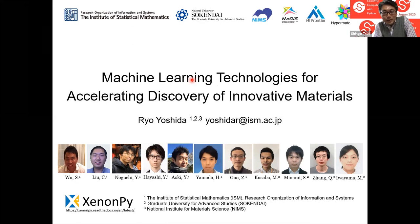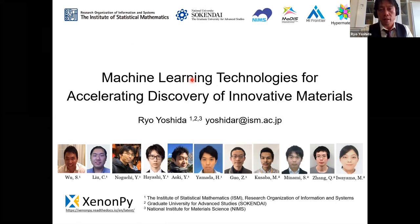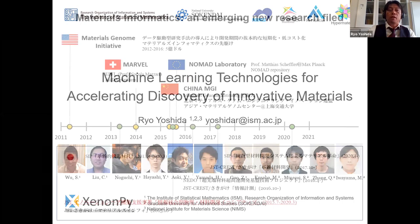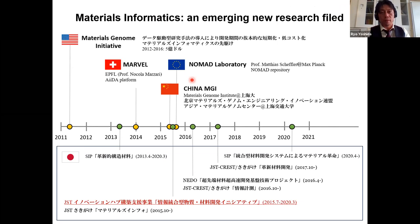どうも。統計数理研究所の吉田と申します。このような場にお招きいただきまして大変ありがとうございます。今日はいわゆるマテリアル・インフォマティクスと呼ばれる、データ化学と物質材料研究の学際領域に関するお話を、サイパイのコミュニティの方々と共有したいと思います。まずマテリアル・インフォマティクスの学術創生に関する話からスタートします。